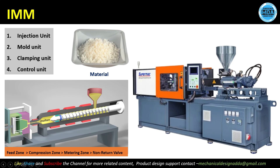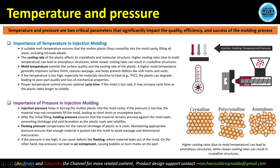Here you can see the cross-section of this machine, where we have the reciprocating screw. This is a very important component in the injection molding machine. It will heat the material, compress the material, and inject the material into the mold unit.